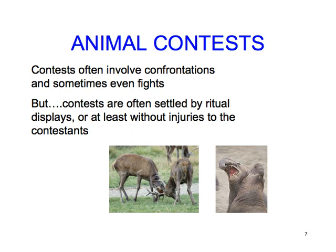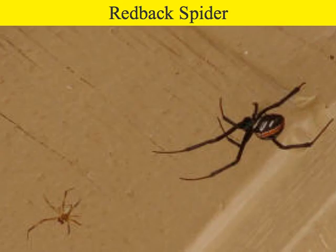We also look at the logic of animal contests, which often involve fights or confrontations, yet are often settled by ritual displays, or at least without injuries to the contestants. We look at why animals sometimes commit infanticide, or sacrifice their own lives — commit suicide.